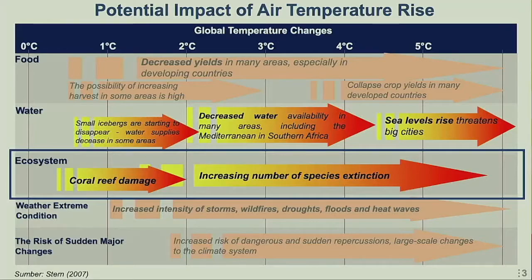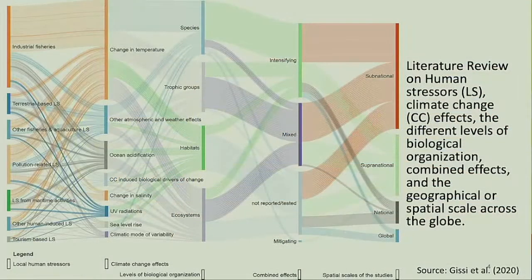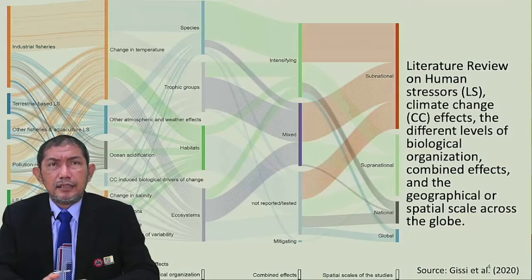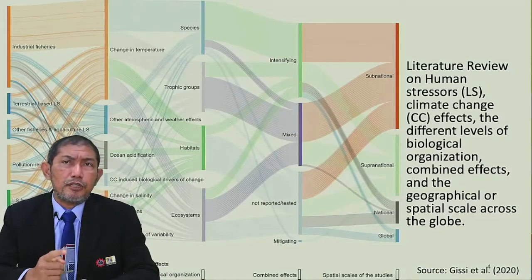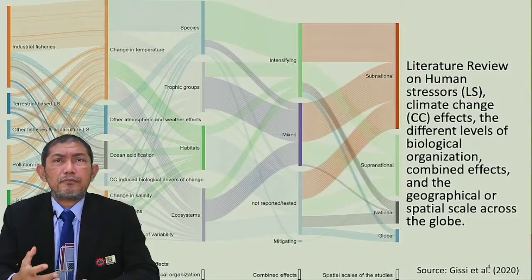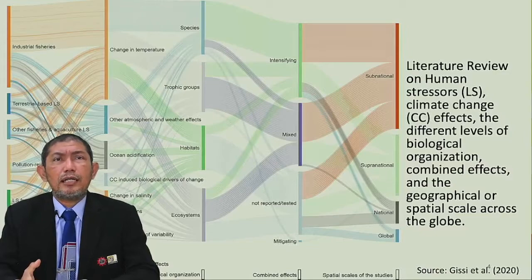Coastal ecosystem degradation, like bleaching of coral reefs and the increasing number of species extinction, is a real threat. We know that IPCC reports show climate change has a collective impact from local to global levels, with several stressors showing inter-correlation between anthropogenic and natural factors, creating a combined effect locally or globally.